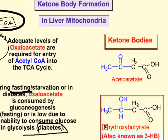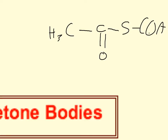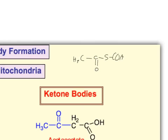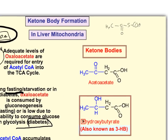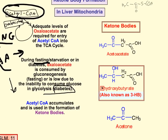Let me draw what an acetyl-CoA looks like. You have a CH₃ connected to a carbon with a carbonyl group, and that's connected to the sulfur and coenzyme A. So acetyl-CoA is essentially two carbon units attached to coenzyme A.